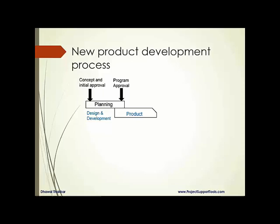The second phase is product design and development. Once your project is approved by management and you get a go-ahead, you start designing your product. You finish this phase with a prototype — a sample that satisfies the customer requirements or meets the specified requirements. So you define a product at this stage.